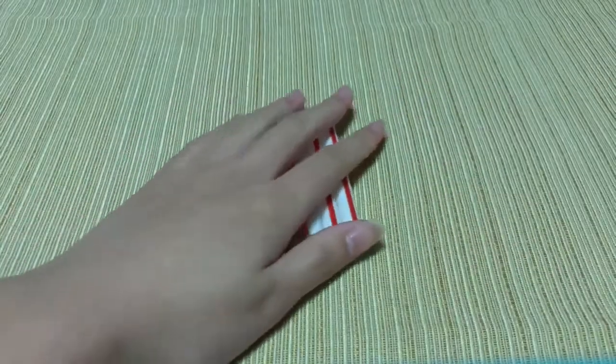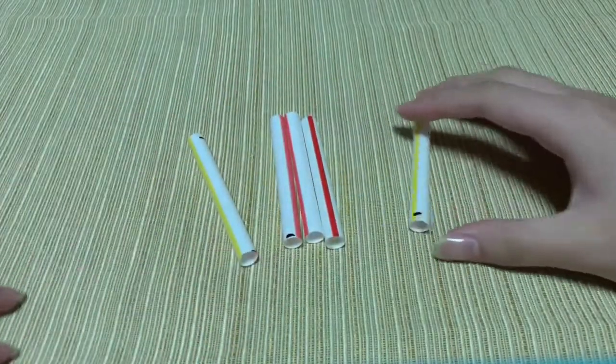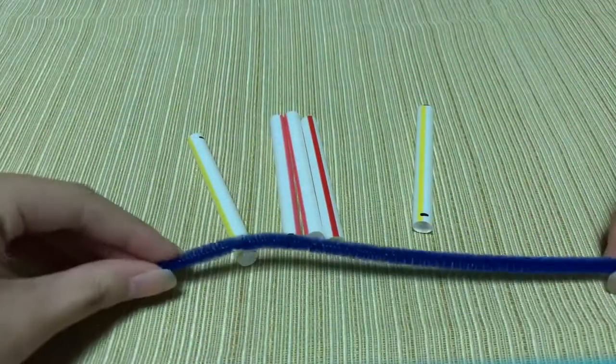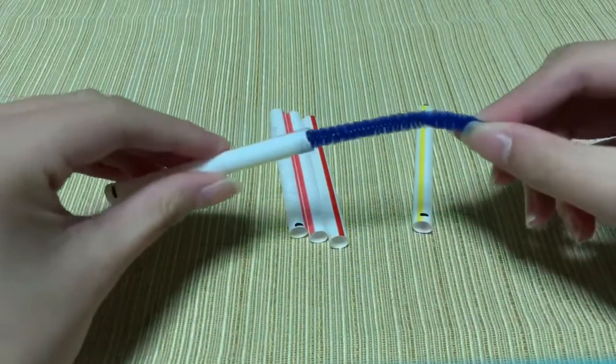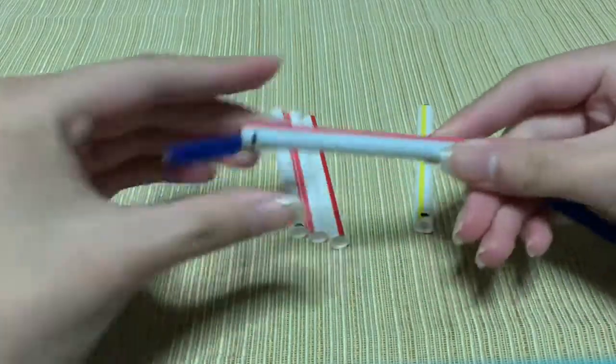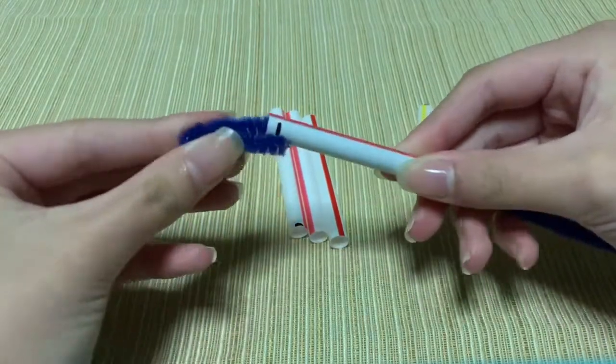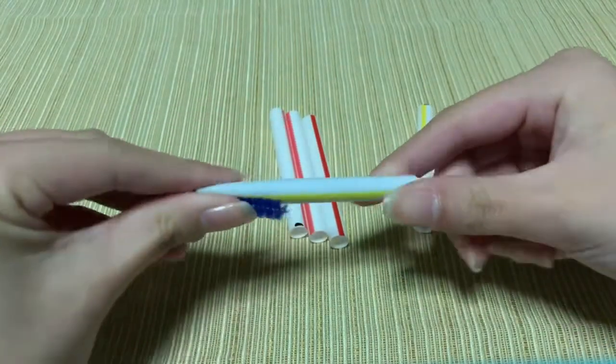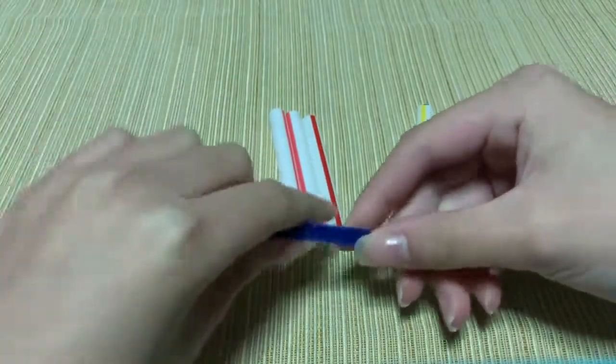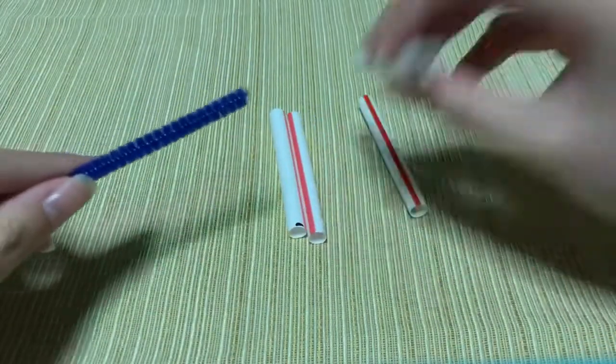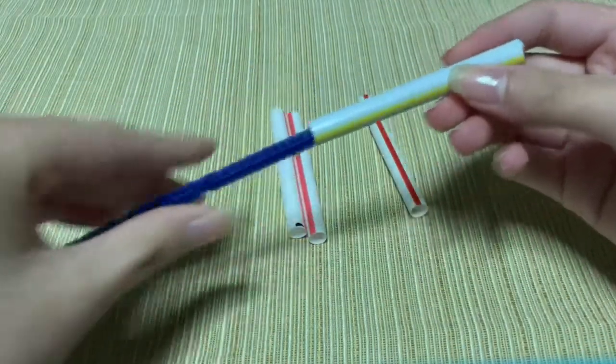Once you've finished cutting all your pieces, it's time to assemble the pentagons. Take a pipe cleaner, thread one strut A before bending the end so it sticks out like so. Then, thread four other strut A's, making sure to bend the pipe cleaner where two struts meet.